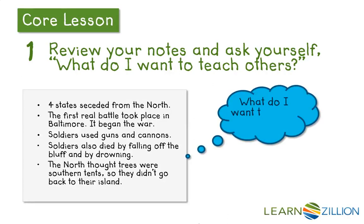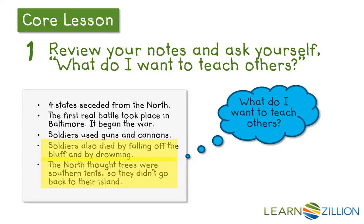Scanning my notes — what do I want to teach others? This last piece of information is actually really interesting to me: the North thought trees were southern tents, so they didn't go back to their island. That's really cool because it's a mistake that soldiers made that actually caused the battle at Ball's Bluff, and it caused soldiers to die by falling off the bluff and by drowning. I could bring those two notes together if I talk about mistakes that caused battles. I think I really want to talk about the mistakes soldiers made that caused different battles of the Civil War to begin.